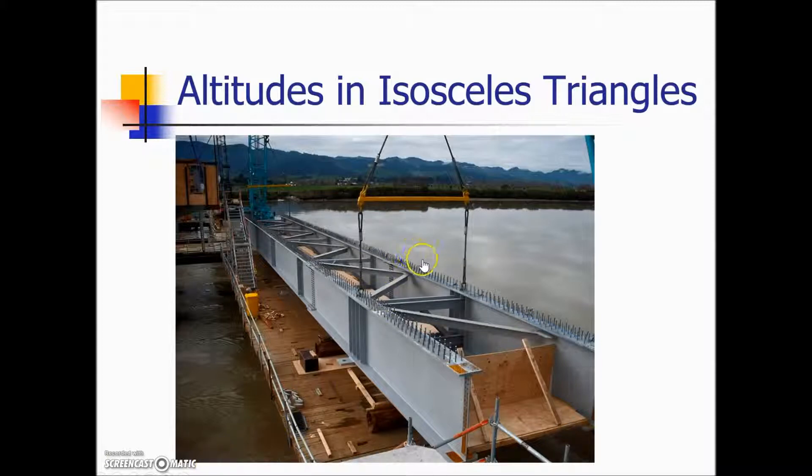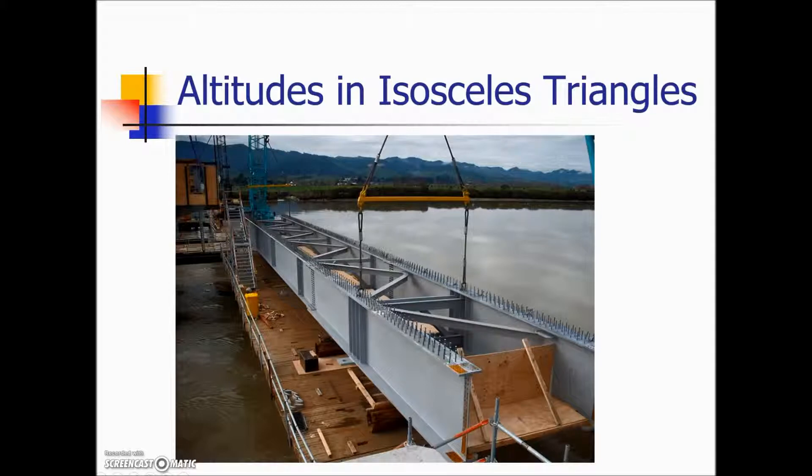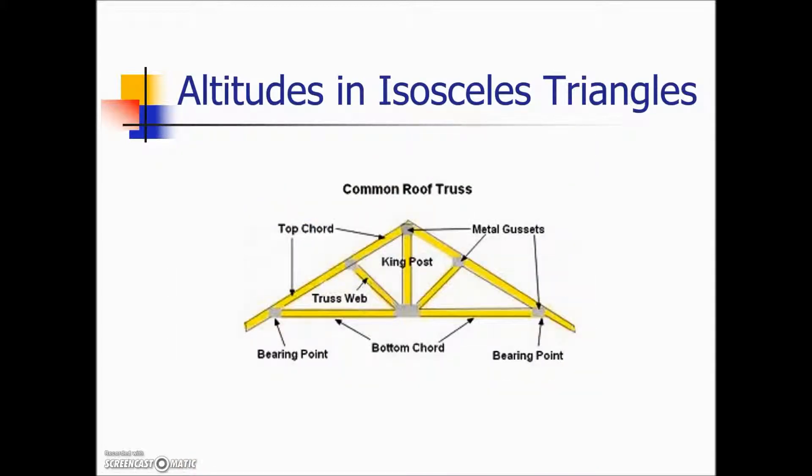And here we see in this construction for this bridge we have our isosceles triangle with that altitude and support there in this construction. Common roof truss, here we have the overall truss is an isosceles and here's the altitude called the king post for this particular truss.